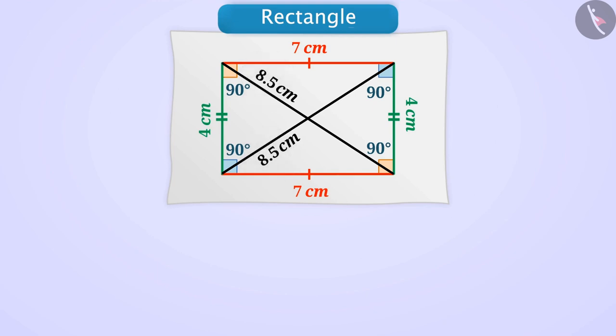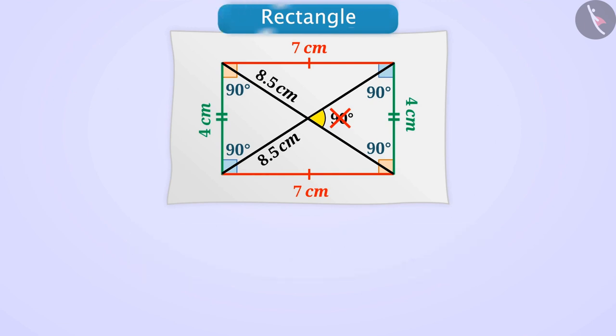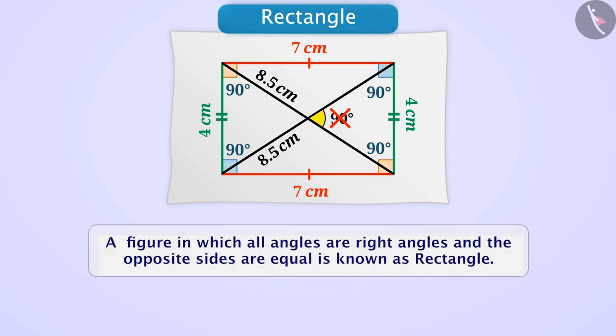However, the diagonals do not intersect each other at 90 degrees, meaning they are not perpendicular. We call this figure a rectangle. A figure in which all angles are right angles and the opposite sides are equal is known as a rectangle.